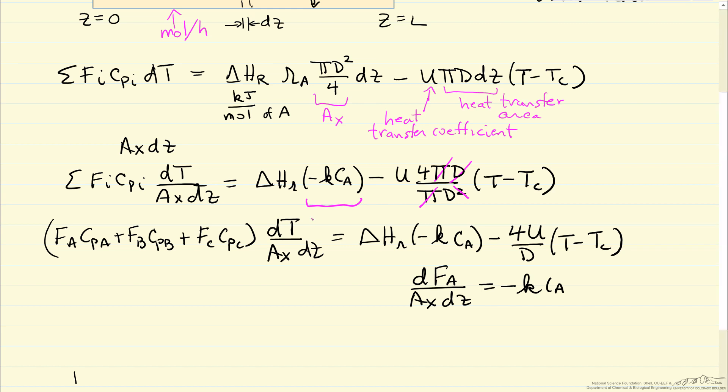Also note that this could be written as dT dV, and likewise, this could be the change in flow rate of A with cumulative volume down the reactor.